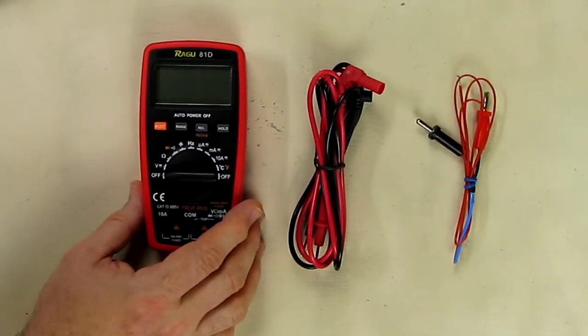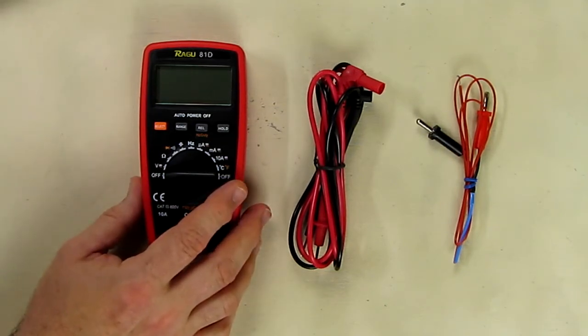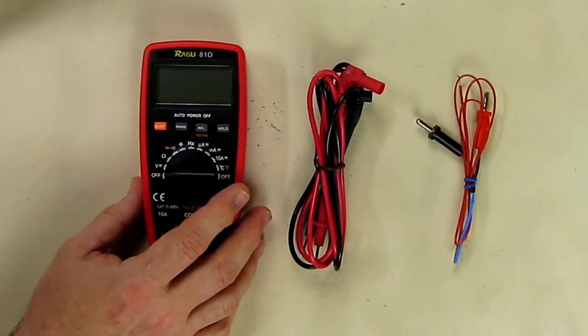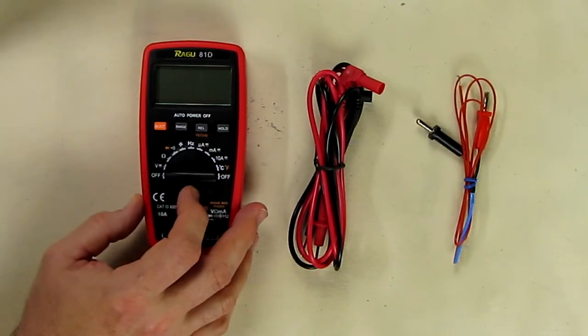The DC goes from 0.4 volts up to 600 volts plus or minus 0.5 percent. The AC goes from 0.4 to 600 plus or minus 0.8. DC current is 400 microamps to 10 amps plus or minus 1 percent. The AC current 400 microamps up to 10 amps plus or minus 1.5 percent.